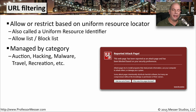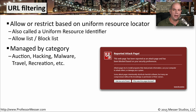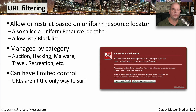These lists are generally managed by category. Instead of having to know every single URL and manage them all individually, you simply roll them up into broad categorizations such as auctioning, known hacking sites, known malware sites, travel sites, or recreation sites. You have complete control over what categories are allowed and what categories are blocked. URLs are just one particular criteria, but you can set up very broad access lists that allow or disallow access to particular sites.